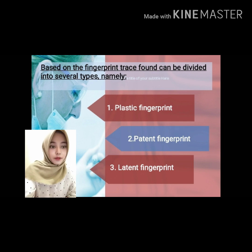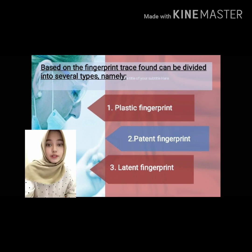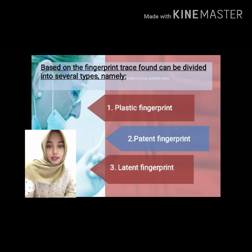Based on the fingerprint trace, fingerprints can be defined into several types. First, plastic fingerprint. These fingerprints are mechanical. For example, if the hand of the offender holds a soap or washing material, the mechanical pressure of the fingers can leave fingerprint marks on the object. This type of fingerprint can be seen visually.